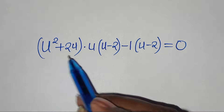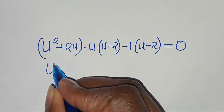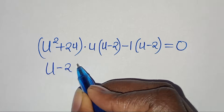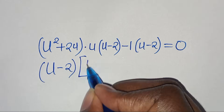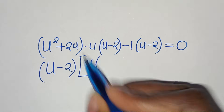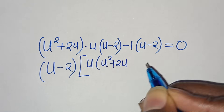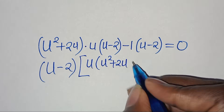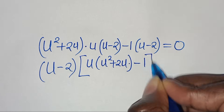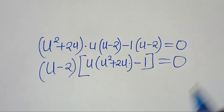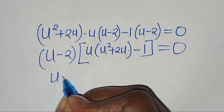So we have that (u minus 2) is common here, so we can factor out (u minus 2), so that into the parentheses here we have u multiplying by (u squared plus 2u), then we have minus 1, this is equal to 0.